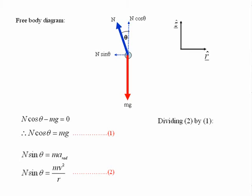If we now divide equation two by equation one, we get tan theta equals v squared over RG. Therefore, the angle of banking required to prevent skidding, even when there is no friction, is given by theta equals tan to the minus one of v squared over RG.